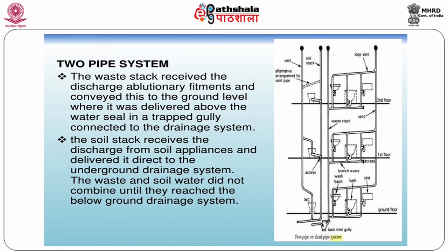In the two-pipe system diagram, the soil pipe is connected to the water closet with a vent arrangement. Similarly, the waste from washbasin, bathroom, and kitchen sink is connected to the waste pipe, which also has a vent. Totally there are four vertical pipes, all connected to the common drain pipe and finally to the street sewer.